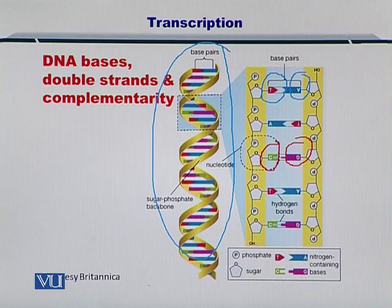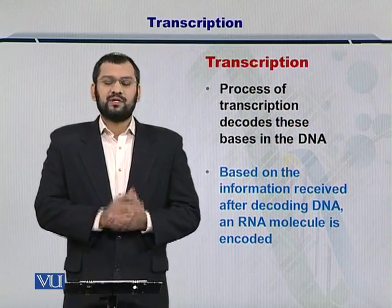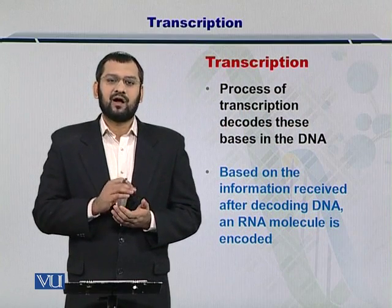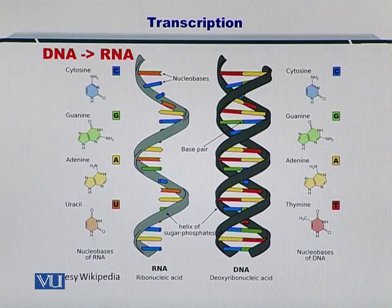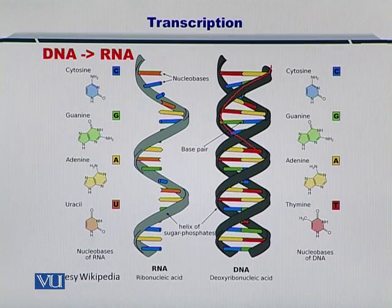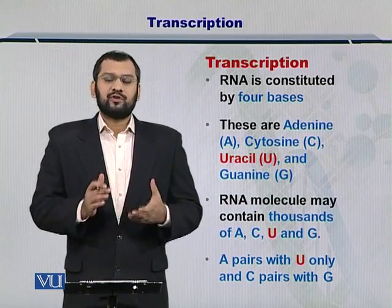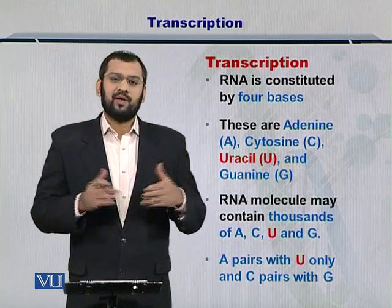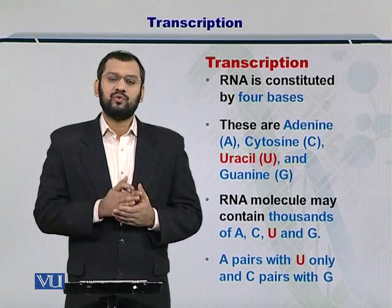G and C never couple with T and A. So the process of transcription decodes information from the DNA and prepares a copy towards producing an RNA molecule. The DNA to RNA conversion involves two important steps: the double stranded DNA is converted into a single stranded RNA while thymine is replaced by uracil. The RNA is then constituted by four bases — A, U, G and C — and an RNA molecule may have multiple copies of these four nucleotide bases.